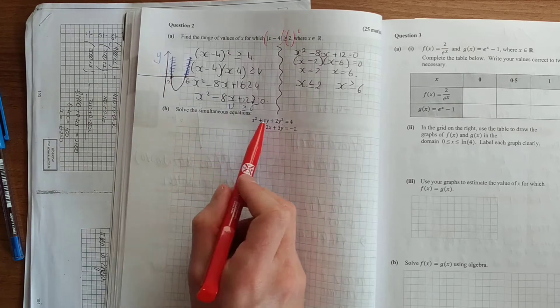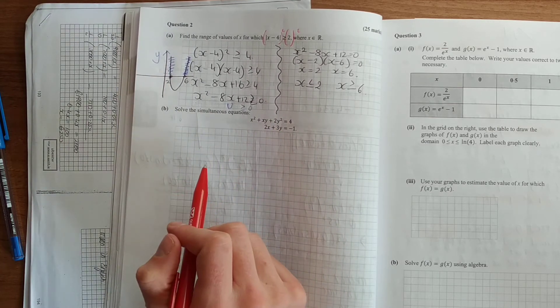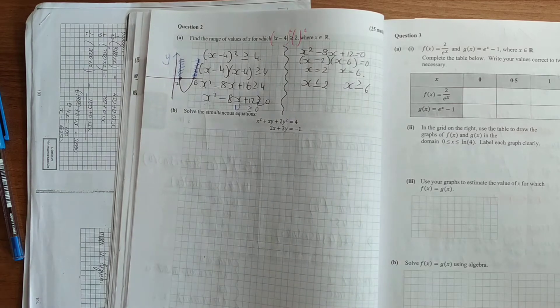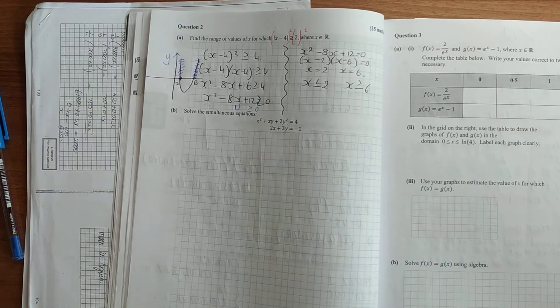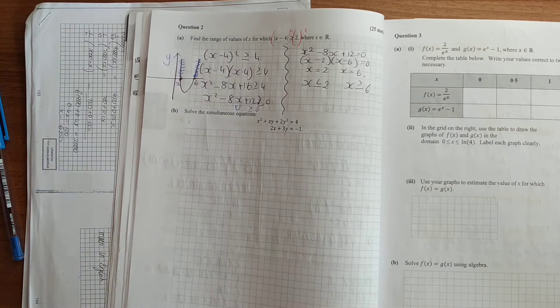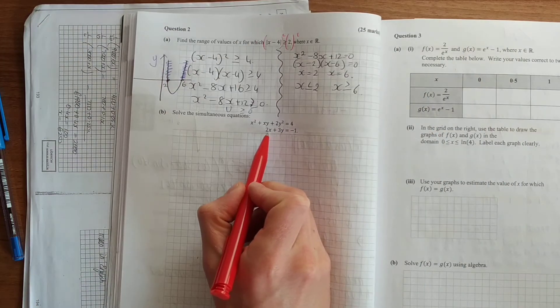This next one, solve the simultaneous equation. So here we have two equations. We must find our values for x and y. I'm going to do this. Work with the linear equation. So here we've got our linear equation.